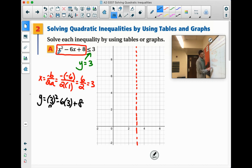So y equals x squared minus 6x plus 8. 3 squared is 9. 6 times 3 is 18. 9 minus 18 is negative 9 plus 8 is negative 1. So our vertex will be at 3, negative 1, which is down here.